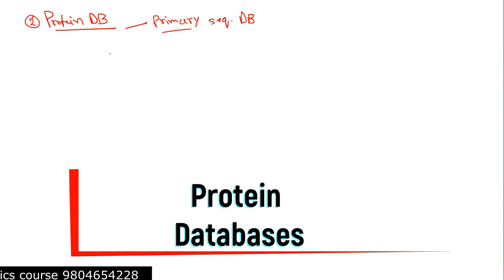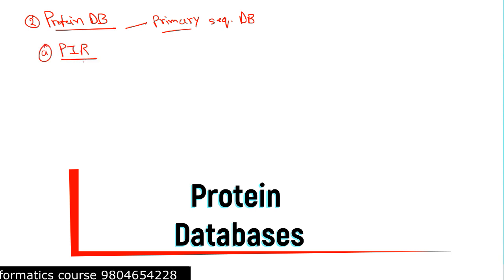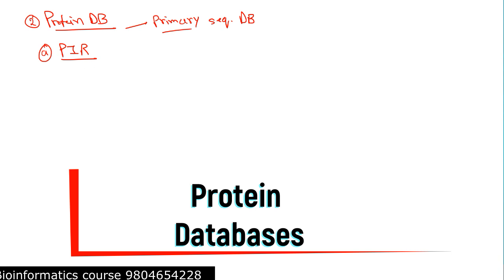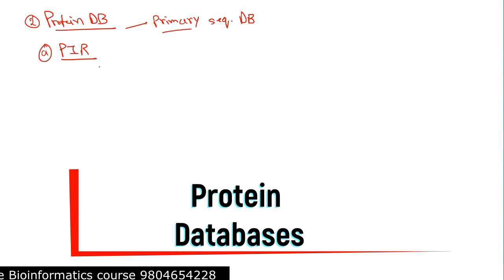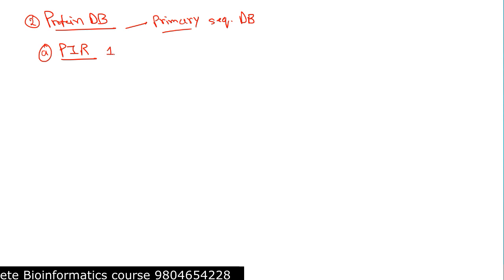Among the primary sequence databases, there are Protein Information Resources — PIR — Protein Information Resources, the database which is also developed by the National Biomedical Research Foundation (NBRF). This PIR has four different categories: PIR-1, PIR-2, PIR-3, and PIR-4.